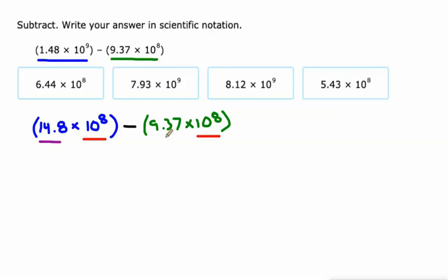So now we've got 10 to the eighth and 10 to the eighth. What's 14.8 minus 9.37? 14.8 minus 9.37 is 5.43, so 5.43 times 10 to the eighth. There's our answer.